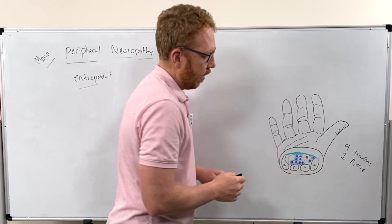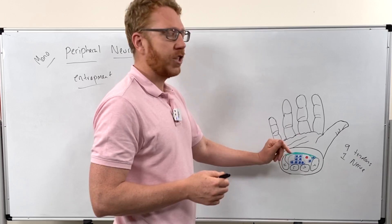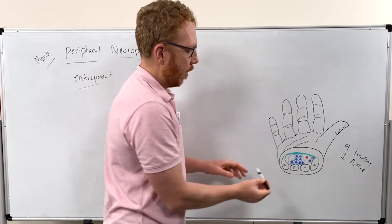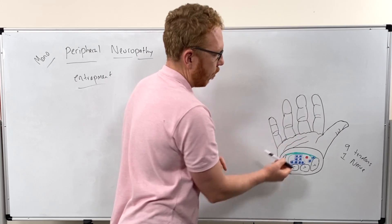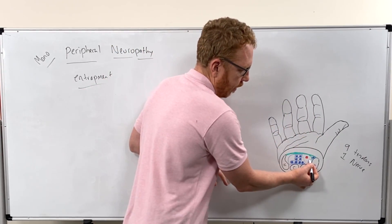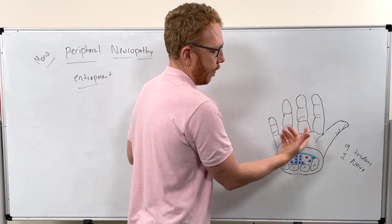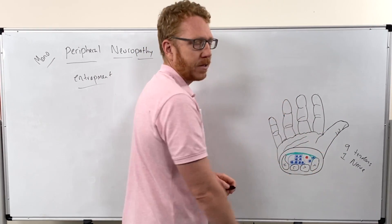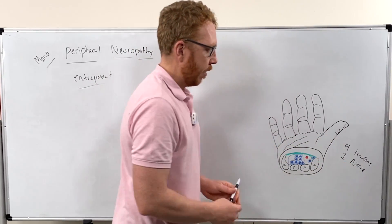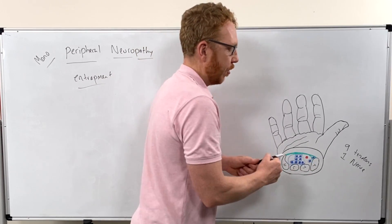The ninth tendon is the flexor pollicis longus, which goes down into the thumb to flex it. So that's all nine tendons. What are we left with? The nerve — the median nerve. It's part of the brachial plexus, and at this point it's coming through to supply some muscles in the thenar group and some lumbricals. For sensation, it supplies the thumb (first digit), second digit, third digit — on the palm side — and the lateral half of the fourth digit, plus the dorsal tips.